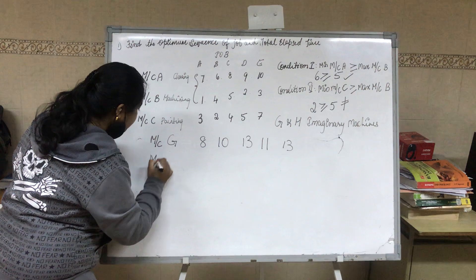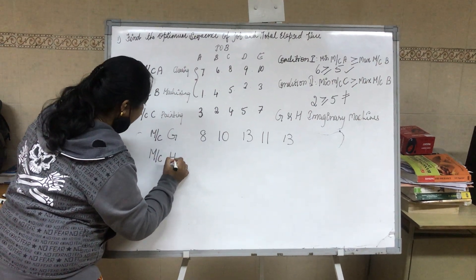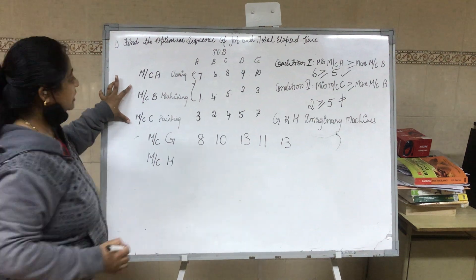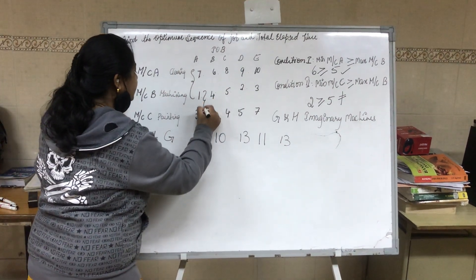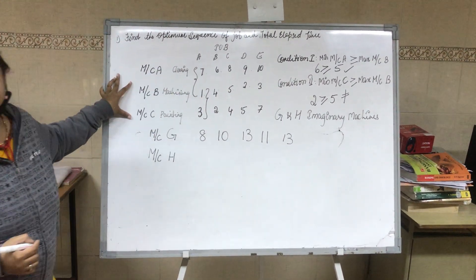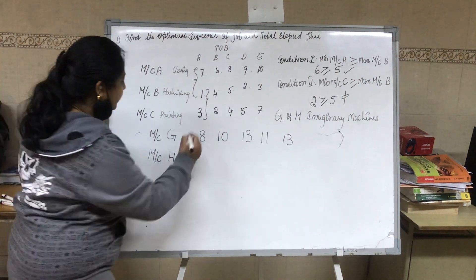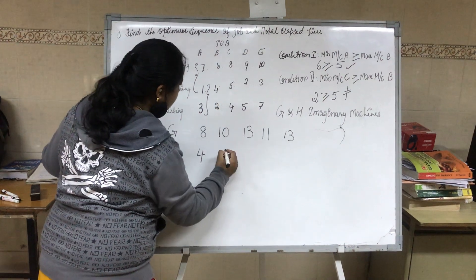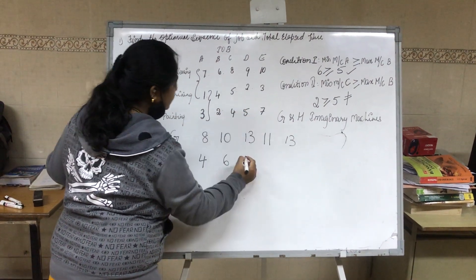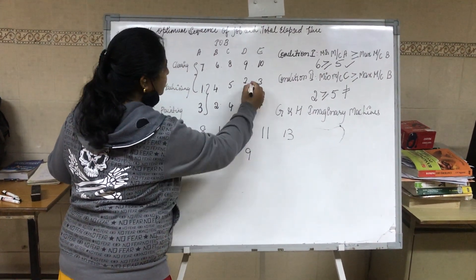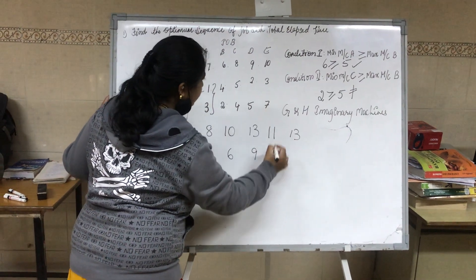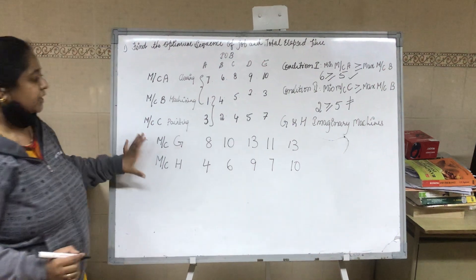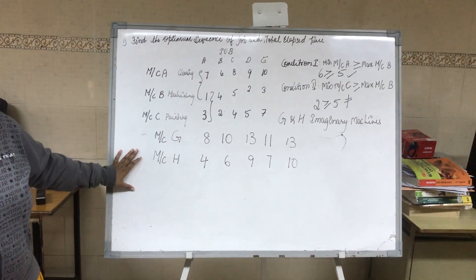Now let's find the machine H values. Machine H equals machine B plus machine C. So: 3+1=4, 4+2=6, 5+4=9, 2+5=7, 3+7=10. We have now found the two fictitious machines G and H. Let's find the optimal sequence.